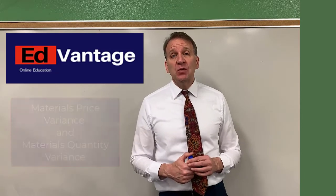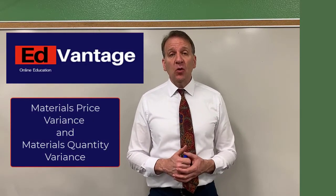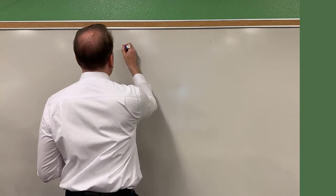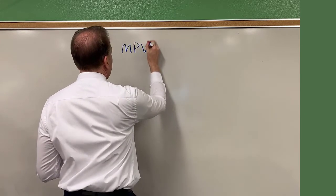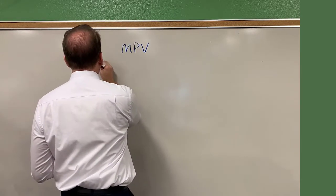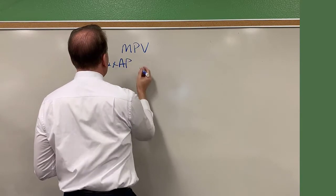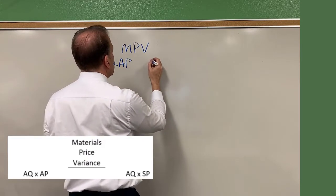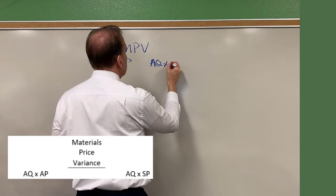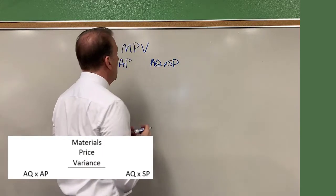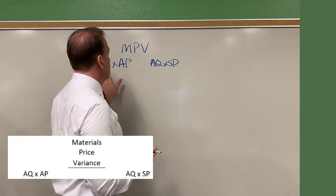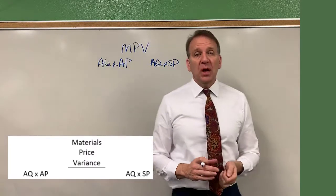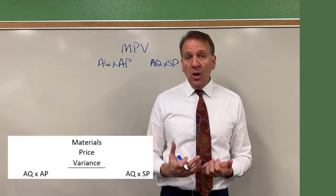In this video, we're going to take a look at the materials price variance and also the materials quantity variance. Let's take a look at the price variance first. The materials price variance, MPV, is the actual quantity times the actual price. Since it's the price variance, we're going to be changing our price — comparing that to the actual quantity times the standard price. So what we actually purchase times the actual price, versus actual purchase times the standard price.